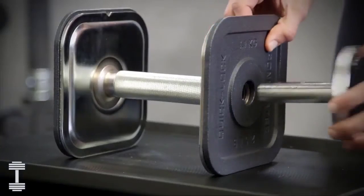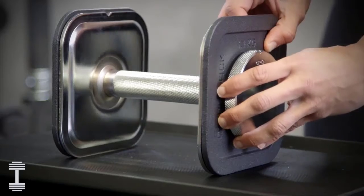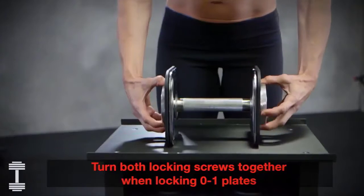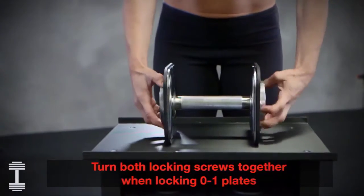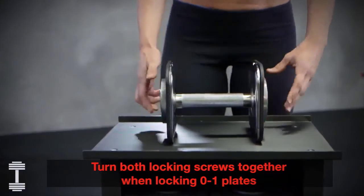If you're loading only one or two of the smaller plates on the handle, you should turn both locking screws to tighten at the same time. Use the same method when locking only the empty screws into the handles.